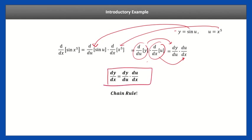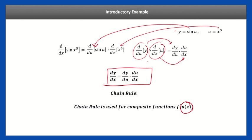I say 'cancel out' in quotations because it's not really like canceling out, but it's a way to help you remember. If you think of these as fractions you manipulate, they cancel and give you the derivative you want. This is not true in general — when you get to multivariable calculus, this won't hold in general — but it's a good guideline. The chain rule is used for composite functions where you have a function within a function.